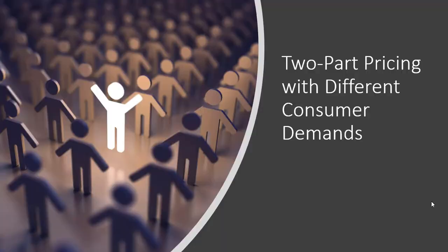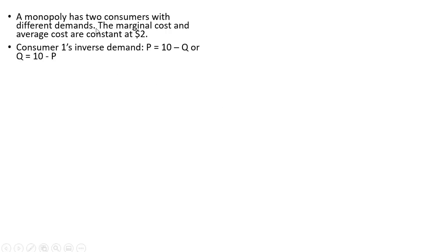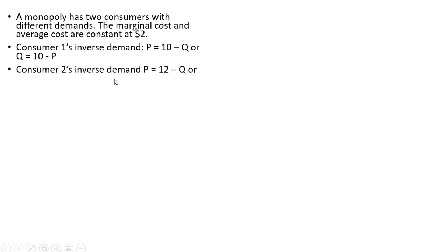In this video, we're going to do a two-part pricing problem with different consumer demands. A monopoly has two consumers with different demands. The marginal cost and average cost are constant at $2. Consumer 1's inverse demand is given by P equals 10 minus Q, or the regular demand is Q equals 10 minus P. Consumer 2's inverse demand is P equals 12 minus Q, or Q equals 12 minus P.